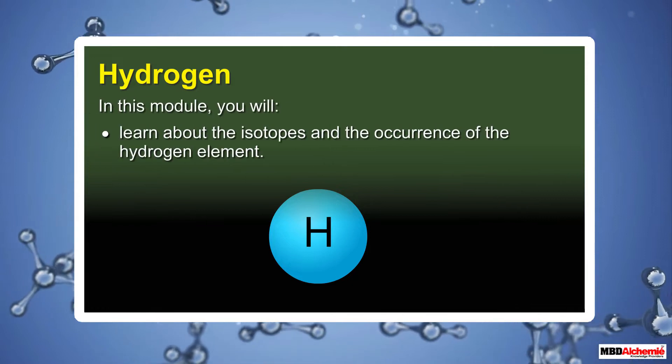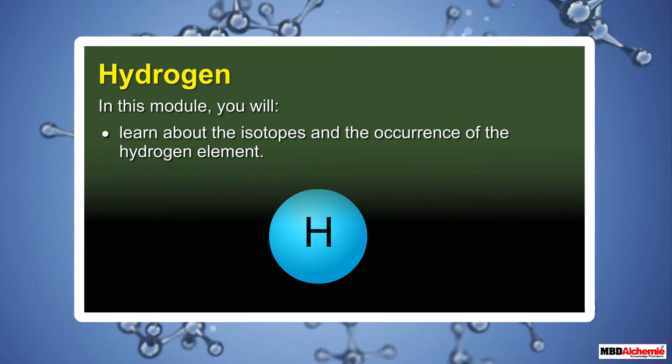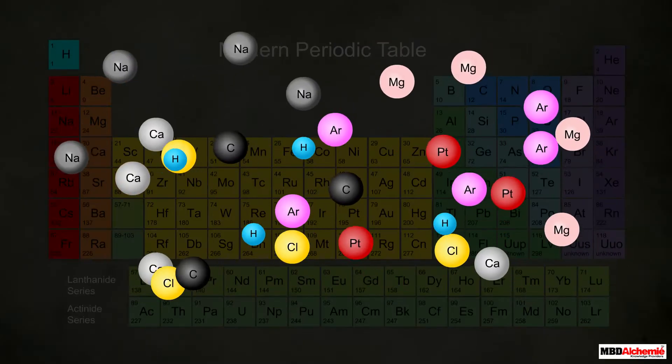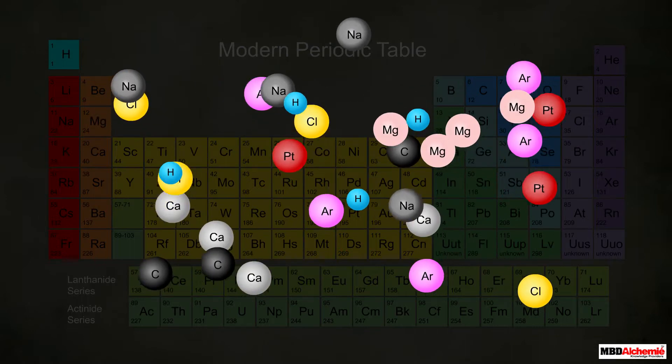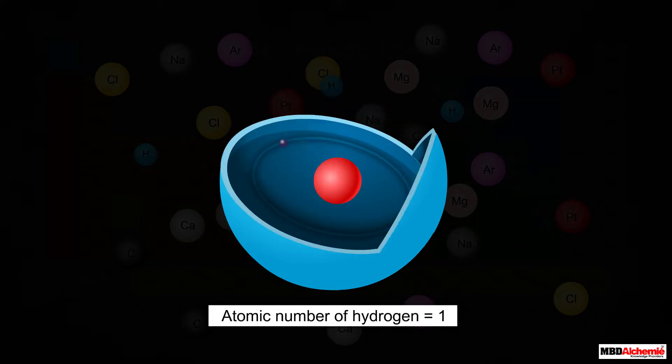Hydrogen. In this module you will learn about the isotopes and occurrence of the hydrogen element. A large number of elements are known to us, and hydrogen is the lightest among them all. Hydrogen has atomic number one, which...